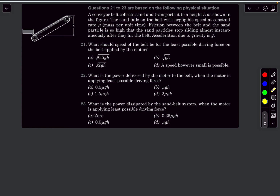Hey everyone, welcome back. In this video we'll take up a problem from variable mass systems. This is from the MCQ section of the chapter Newton's laws of motion. We have a conveyor belt that collects sand and transports it to a height h as shown in the figure.